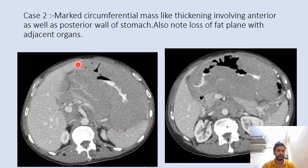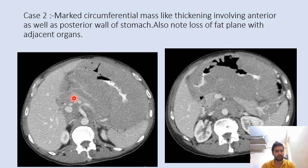The loss of fat planes is due to extensive spread of the gastrointestinal lymphoma, which also indicates that it is at an advanced stage.